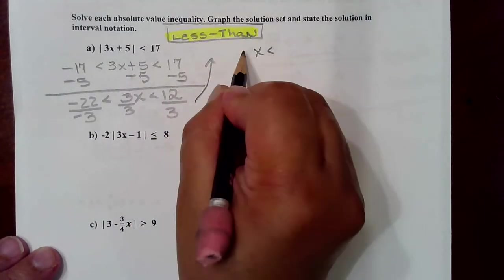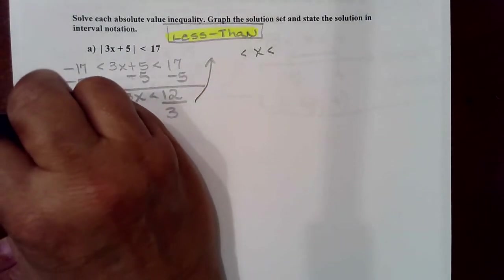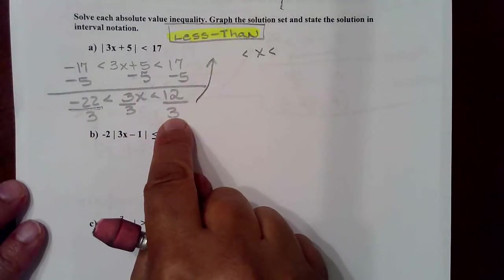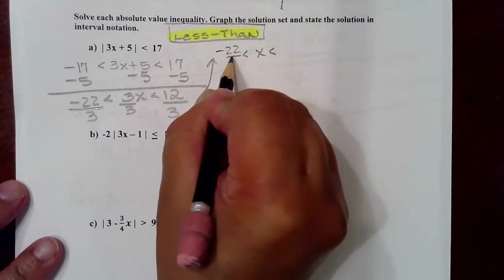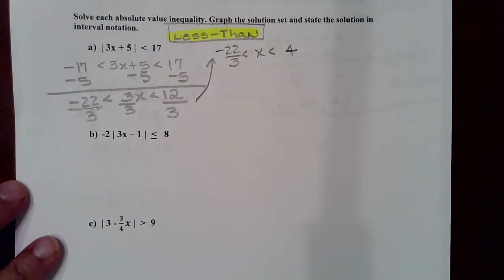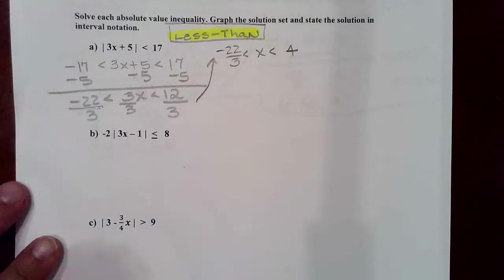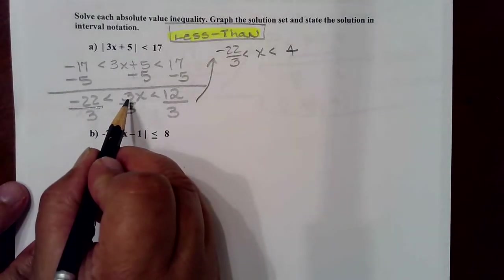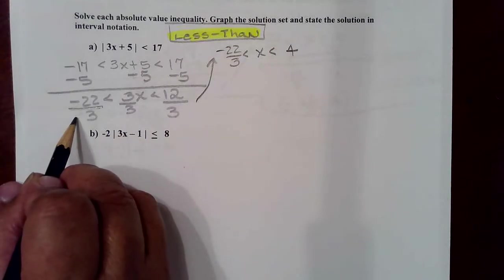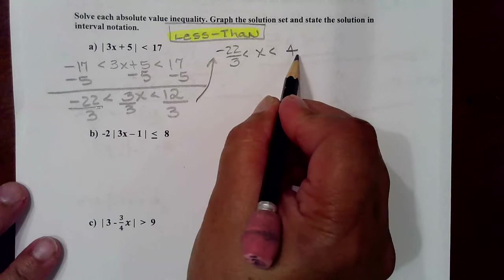Completing these steps, we now have x isolated in the middle. This is supposed to be a positive 3, not a negative 3, so I divided by 3 in all areas, and so we have negative 22 over 3. We have just an x in the middle, and we have a 4 on the right-hand side. Reviewing the steps: we subtracted 5 to remove the positive 5, which caused us to subtract 5 in all three areas, giving us 3x in the middle. We then divided by positive 3, giving us negative 22 over 3 on the left, x isolated in the middle, and 4 on the right.